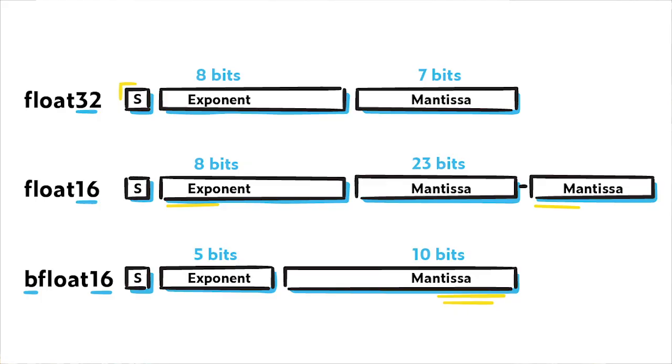I want to stop talking about systolic arrays — which is really hard because the more I learn about them, the cooler they get — but I also want to talk about something equally cool within our TPUs: the bfloat16 number format. Breaking down the term: 'B' stands for BRAIN, as in Google BRAIN, the AI research group that developed this format. And 'float16' refers to the floating point number system, which is a little different from the industry standard IEEE 16-bit floating point number system. There are a couple of things that make bfloat16 multipliers really optimal for our deep learning tasks. The first is that the range of a bfloat16 multiplier is pretty close to that of a 32-bit floating point multiplier.